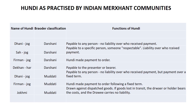Dhanijog, also called Muddati, was payable to any person with no liability over who received the money, but payment was to be made over a fixed term — meaning after some fixed time, the amount was to be given. Farman Jog was a Muddati Hundi made payable to order following a fixed term, meaning payment was made according to order after a fixed period.